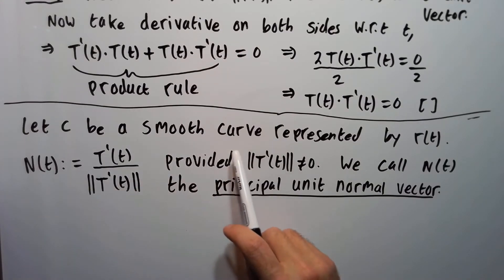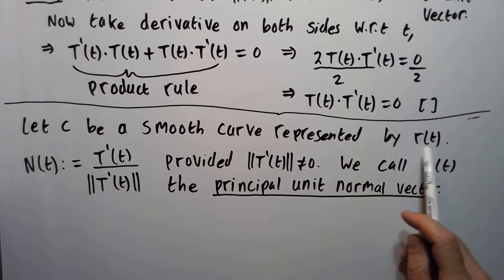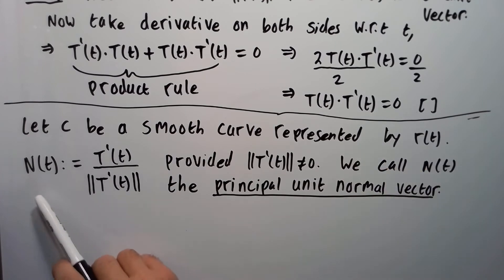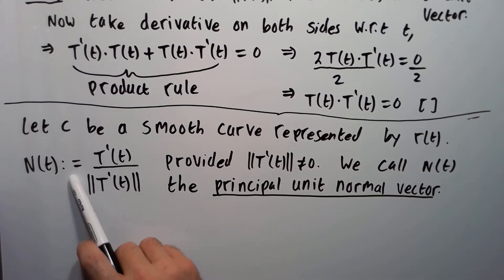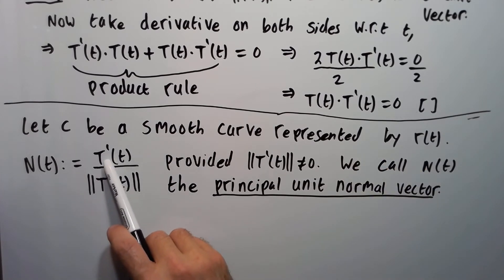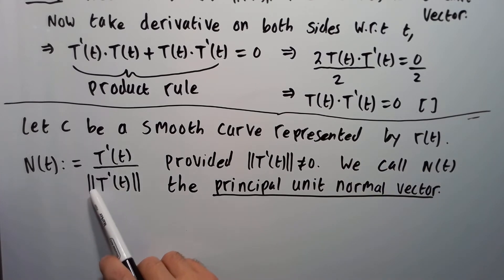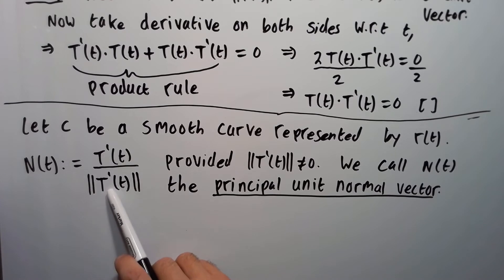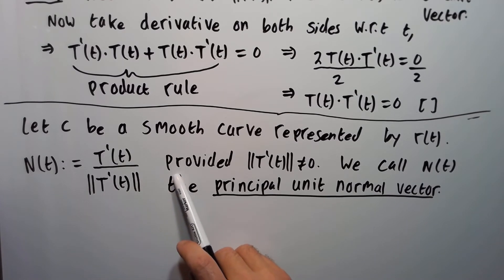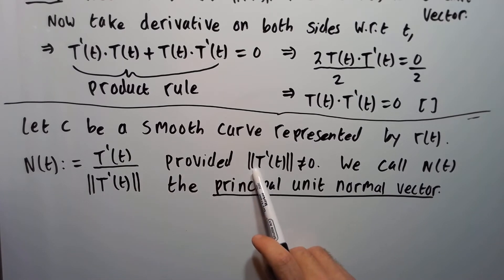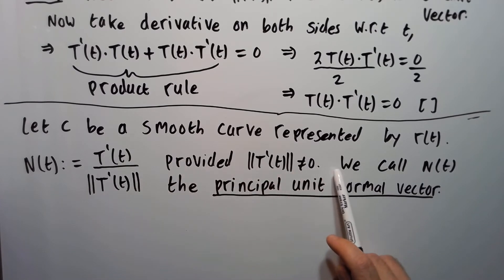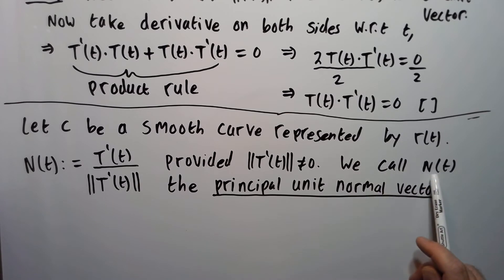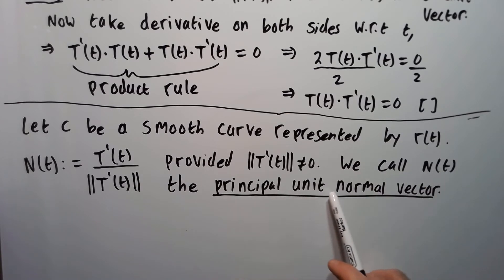Next, let C be a smooth curve represented by R of T. Then capital N is defined to be capital T prime over the magnitude of T prime, provided the magnitude of T prime is not zero. We call capital N the principal unit normal vector.